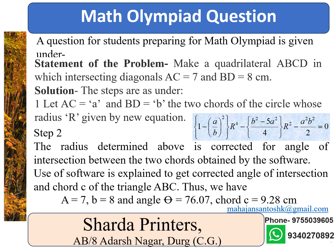Solution. The steps are as under. Let AC equal A and BD equal B, the two chords of the circle, whose radius is given by a new equation. On substituting chords A and B, the radius of the circle R is found to be equal to 5.48 cm.